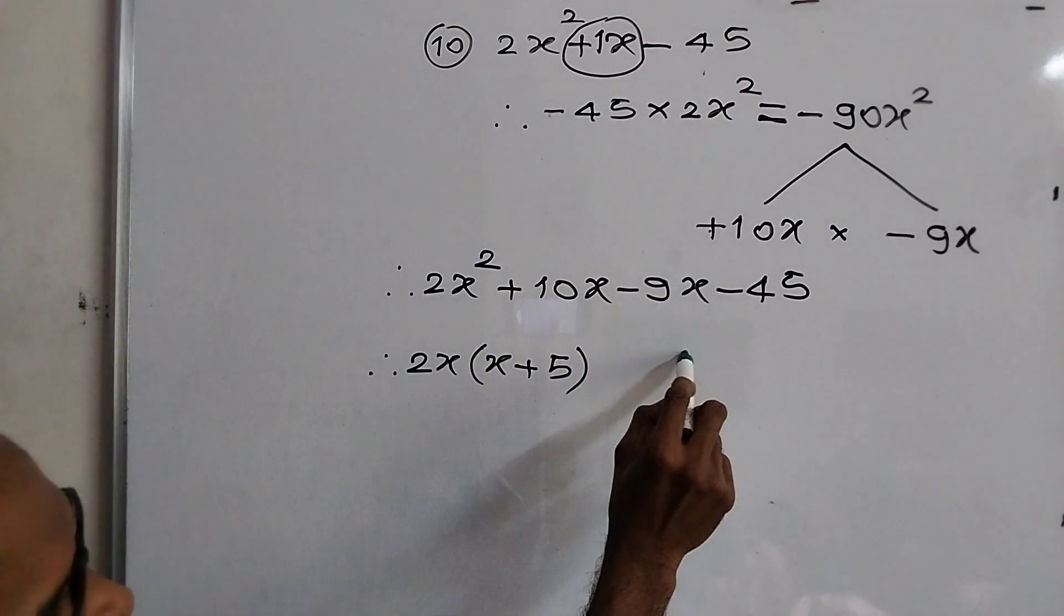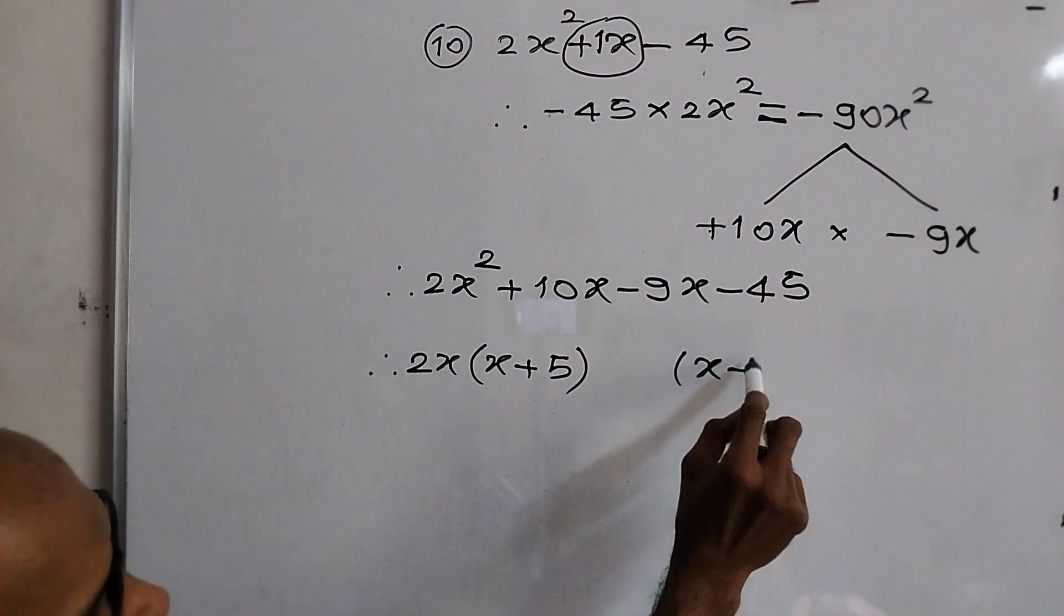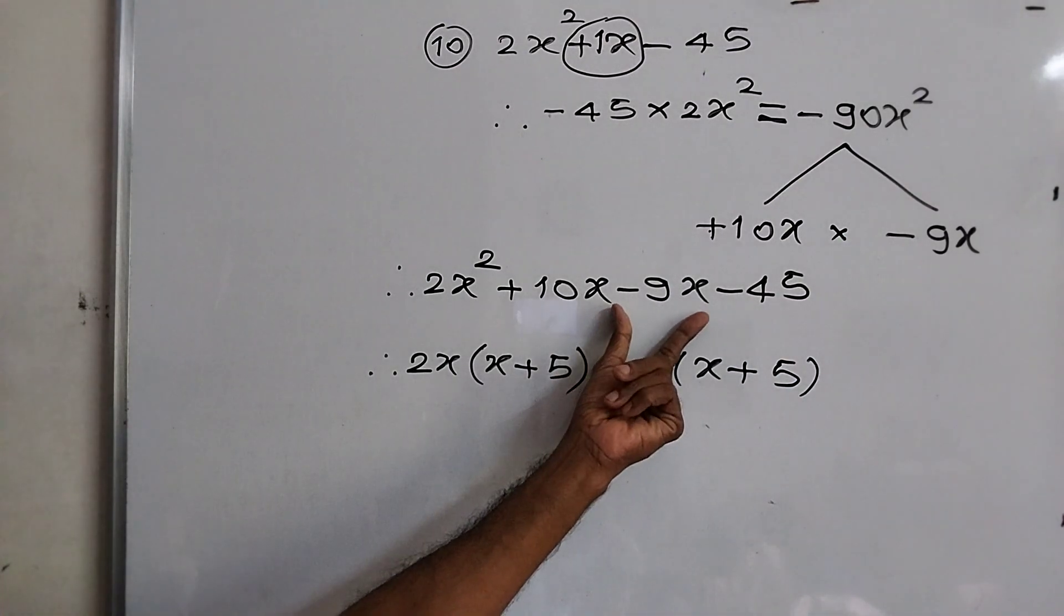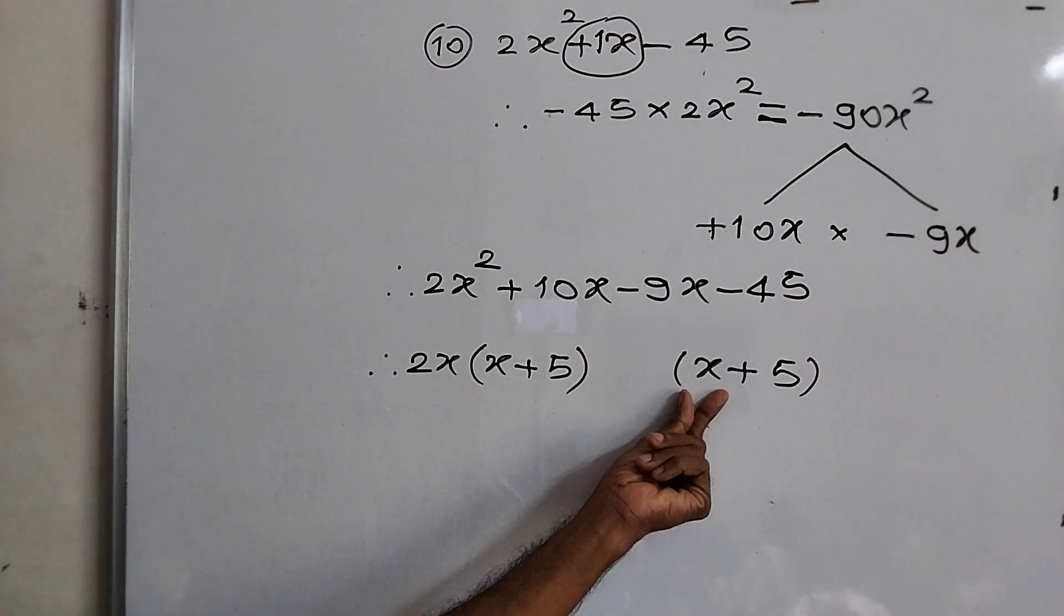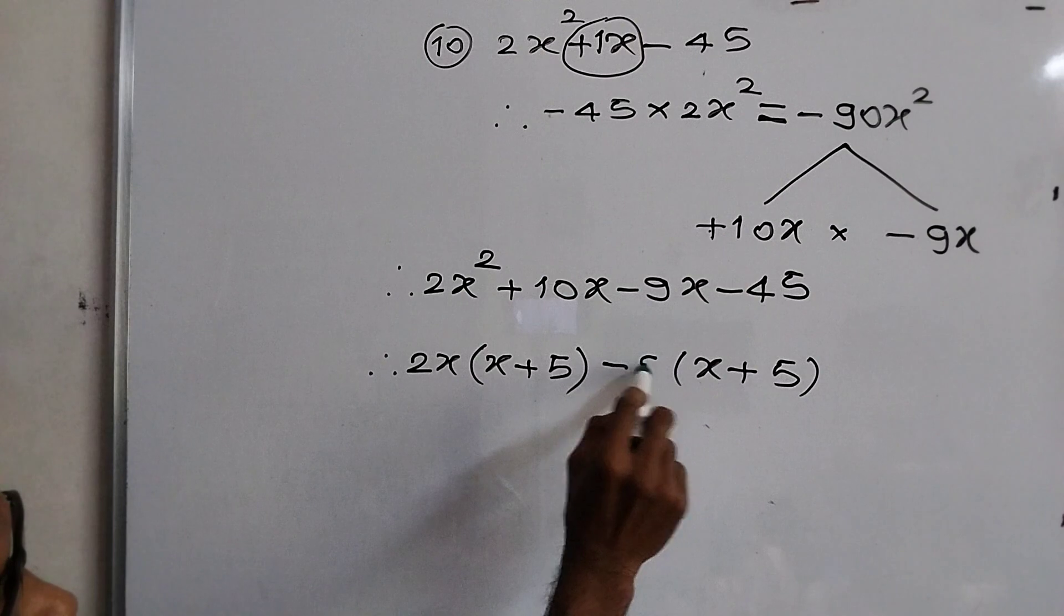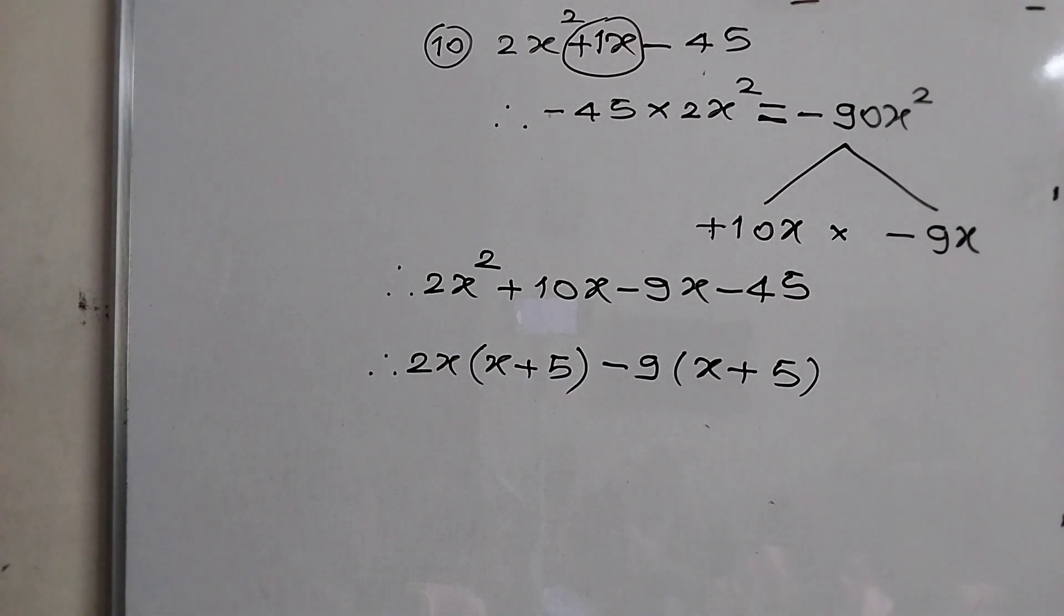Now same bracket, I told you many times. Same to same bracket. Now what is this? Minus 9 and what is this? x. Then what is left? Minus 9. Did you understand? Yes.